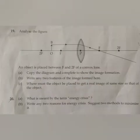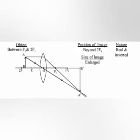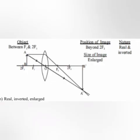Question 19: Analyze the figure. An object is placed between F and 2F of a convex lens. (a) Copy the diagram and complete to show the image formation. (b) Write any two features of the image formed here. Answer: real, inverted, enlarged.